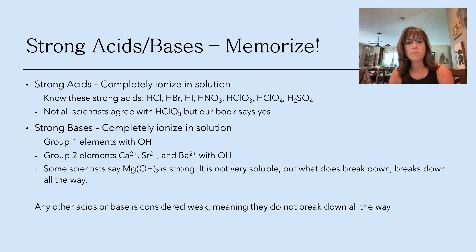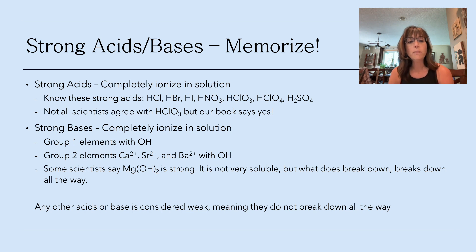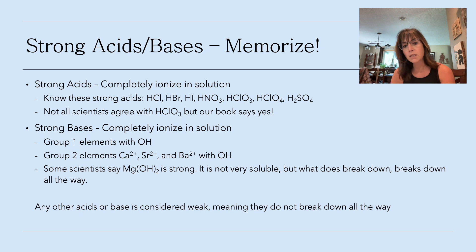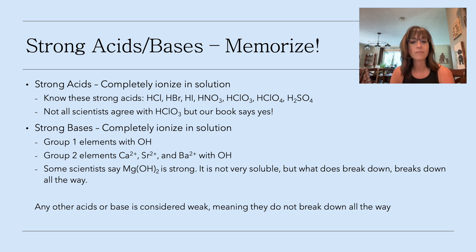The strong bases: basically if you have anything with Group 1 — except for hydrogen — and OH, it is a strong base. So lithium hydroxide, potassium hydroxide, and so on. For Group 2 elements, only calcium, strontium, and barium — the heavier ones — when paired with OH are considered strong. So calcium hydroxide, strontium hydroxide, and barium hydroxide are strong. Some scientists argue that magnesium hydroxide is a strong base — it's not very soluble, but what does break down breaks down all the way. Any other acid or base not on this list is considered weak. Period. You need to memorize these and know the formulas.